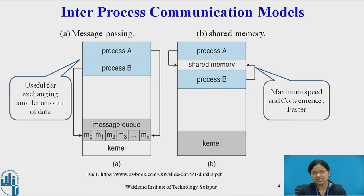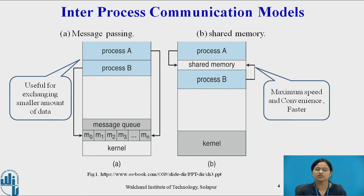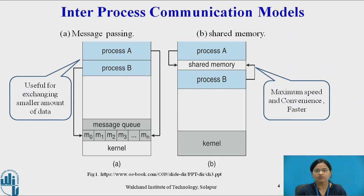In shared memory, a system call is used only to establish the shared memory region. Once the shared memory region is established, there is no kernel intervention when processes are communicating with each other. That is why shared memory is faster than message passing.